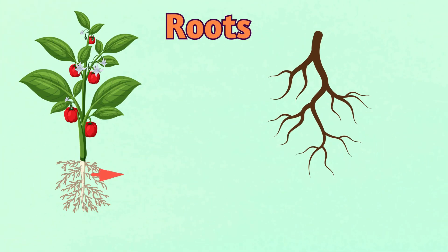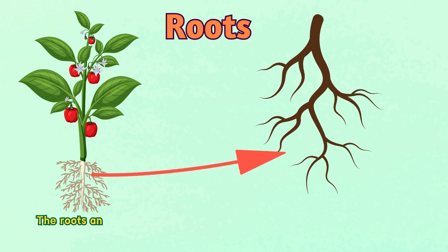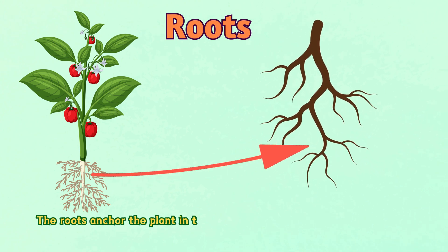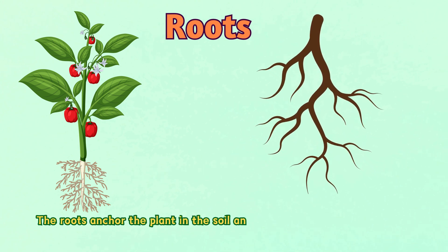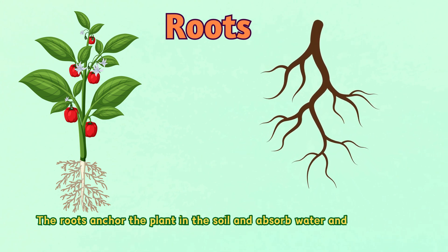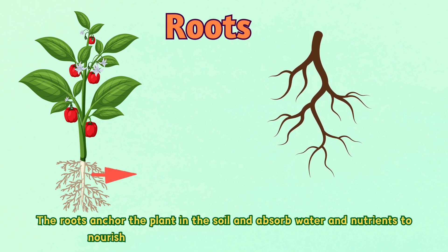Number one: roots. The roots anchor the plant in the soil and absorb water and nutrients to nourish the plant.